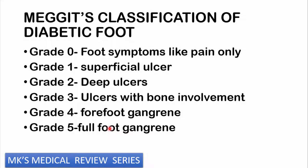There is a classification known as the MEGITS classification of diabetic foot, graded from zero to five. Grade 0: no foot symptoms aside from pain. Grade 1: superficial ulcer. Grade 2: deep ulcer. Grade 3: ulcer involving the bone — necrotic tissue reaching bone on debridement. Grade 4: forefoot gangrene — the forefoot is affected. Grade 5: the entire foot is affected.